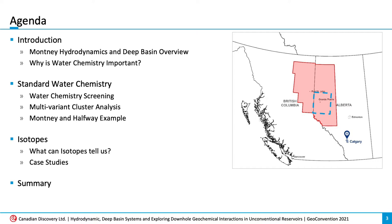During this presentation, we will take a look at many different aspects of the water story, both in aquifers and conventional reservoirs and unconventional reservoirs, with the goal of circling back as often as possible to how understanding water chemistry can play a role in the Motney formation of Western Canada, particularly in the under-pressured fairway of the Motney, located in Western Alberta, as indicated by this blue box here. We will start by looking at a quick overview of Motney hydrodynamics and the Deep Basin and talking about why water chemistry is important.